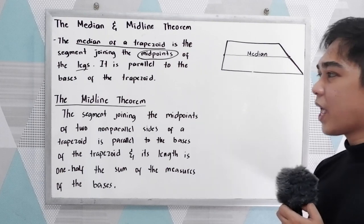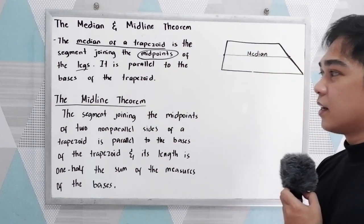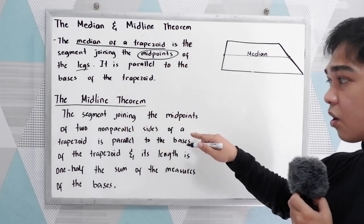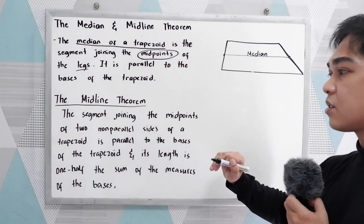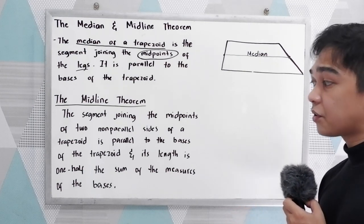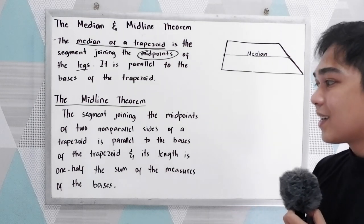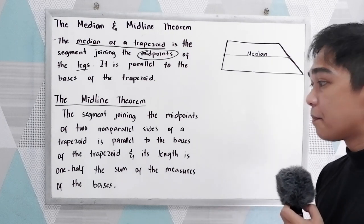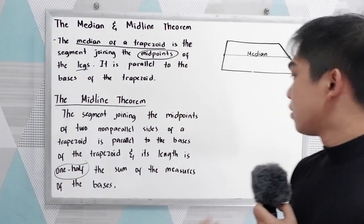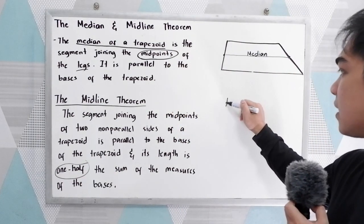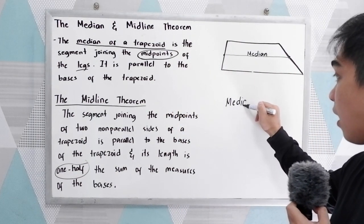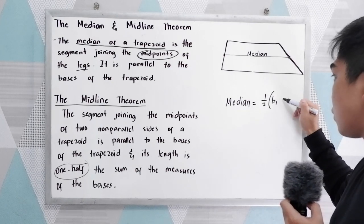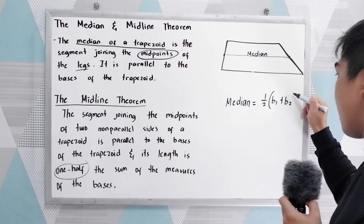We also have the midline theorem. It is the segment joining the midpoints of two non-parallel sides of a trapezoid that is parallel to the bases of the trapezoid, and its length is one-half the sum of the measures of the bases. So the median is one-half of the sum of base one plus base two.